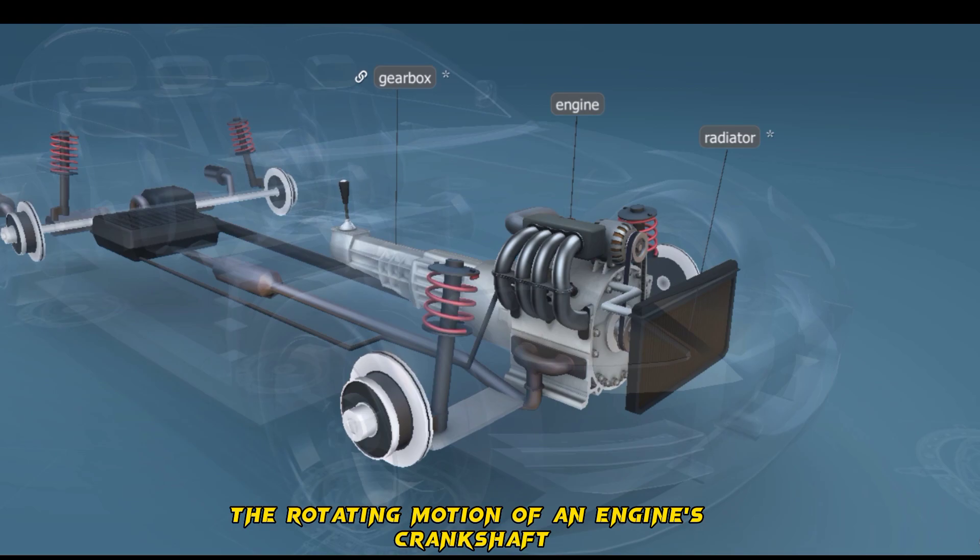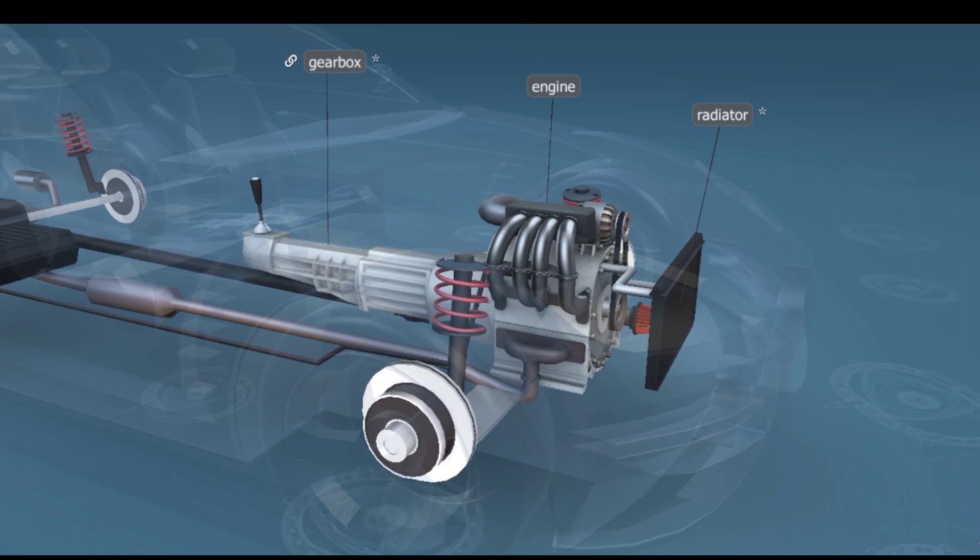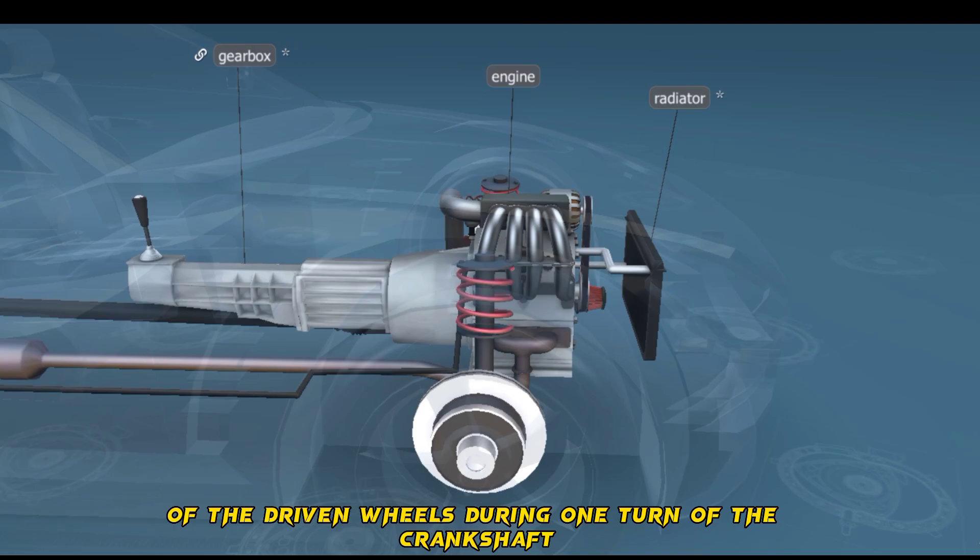The rotating motion of an engine's crankshaft is transmitted to the wheels by the drive shaft. The gearbox changes the number of rotations of the driven wheels during one turn of the crankshaft.